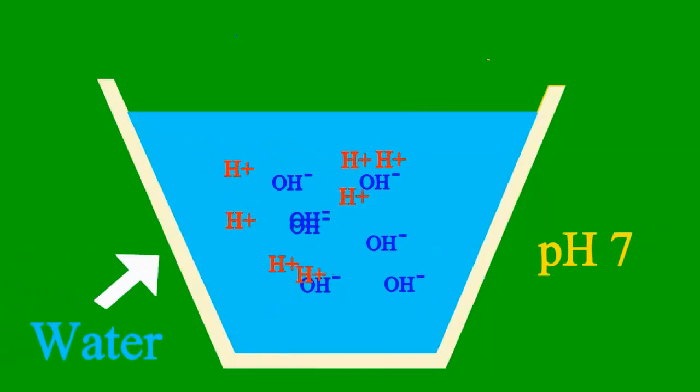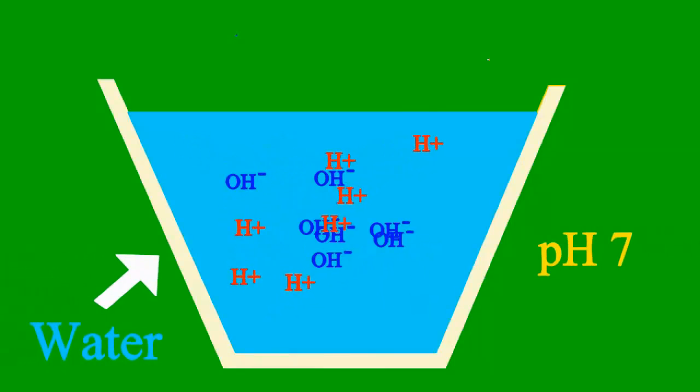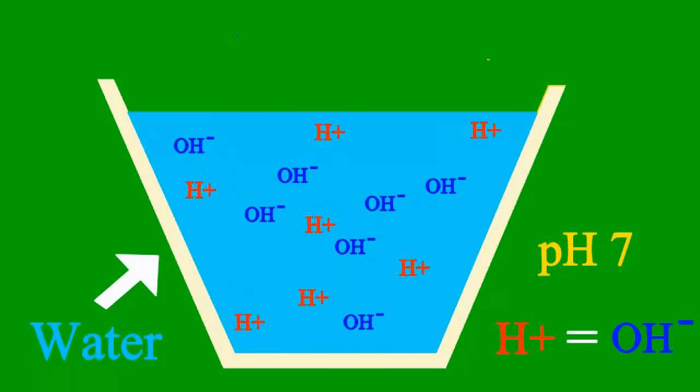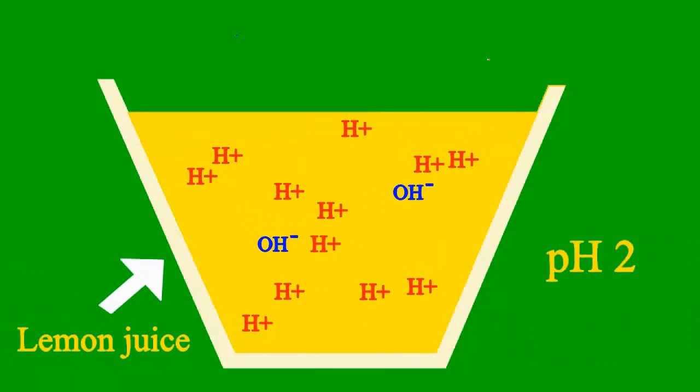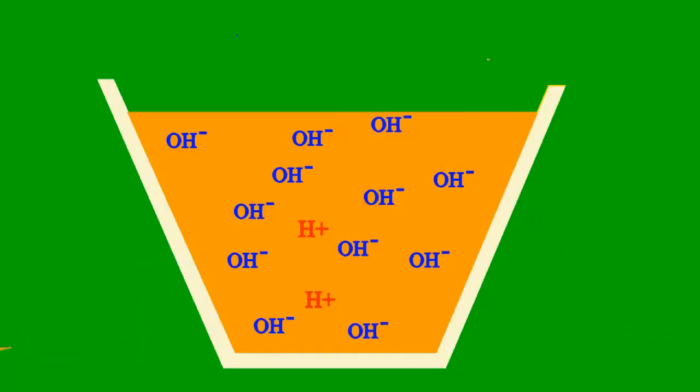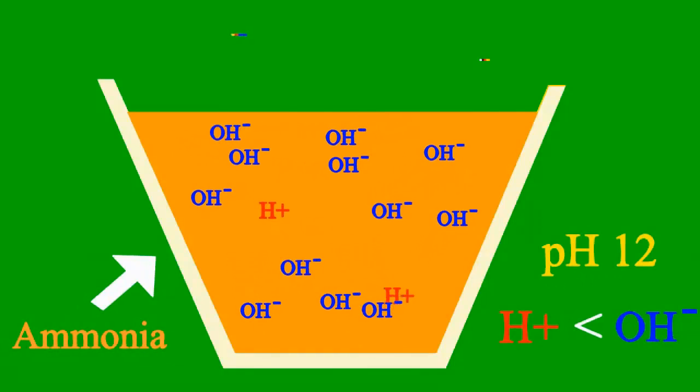When the pH is 7, it's a case where the sample is neither an acid nor base. But less than 7, it's an acid we say. More than 7, it's a base all the way.